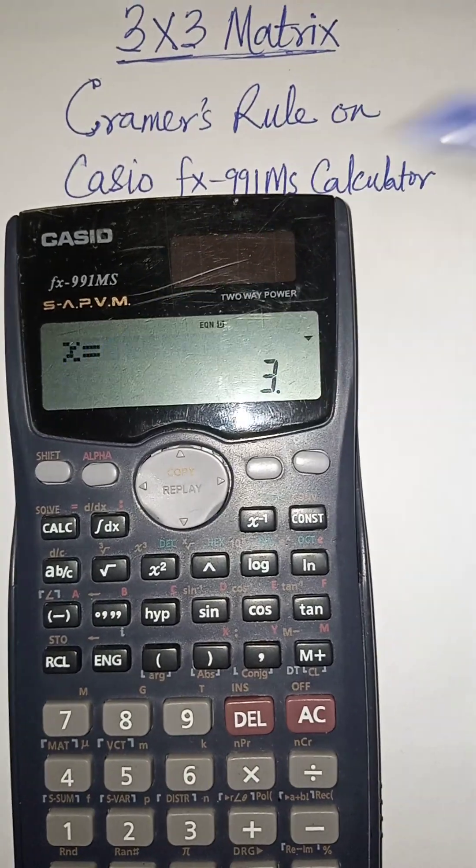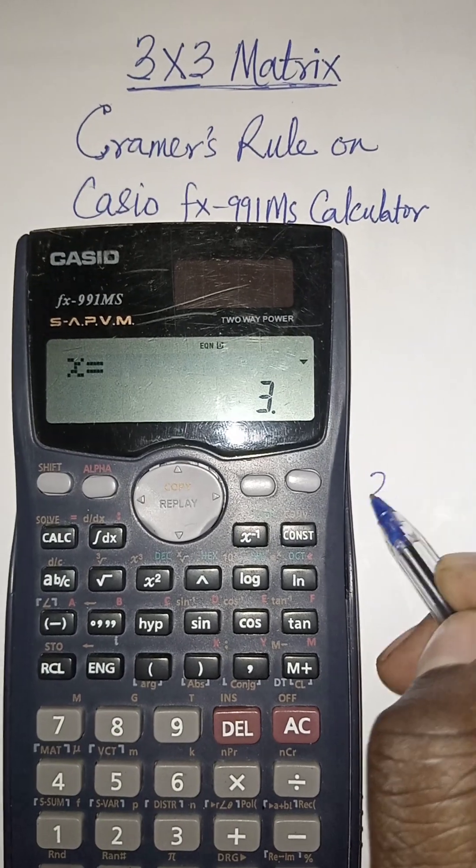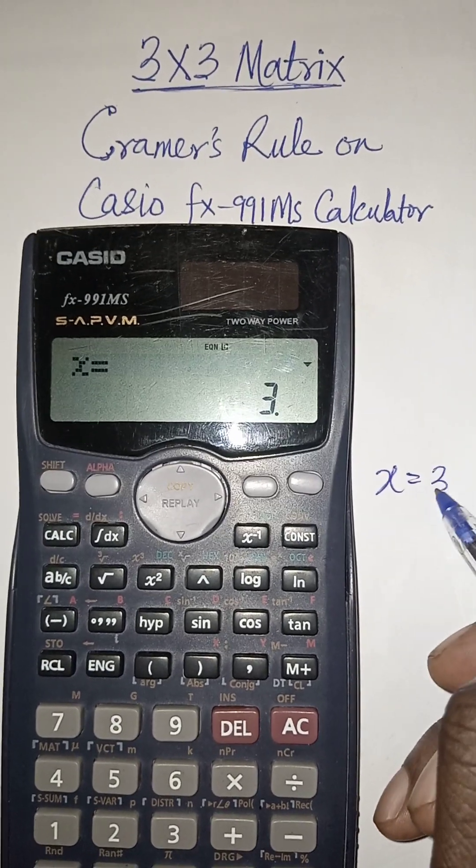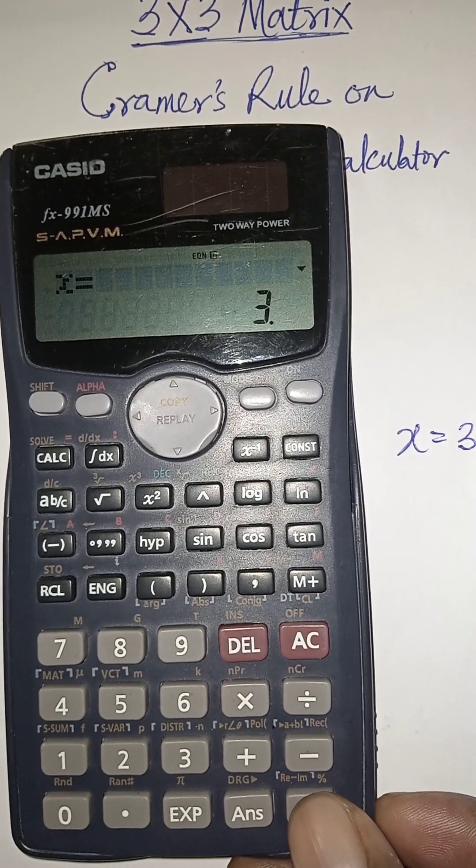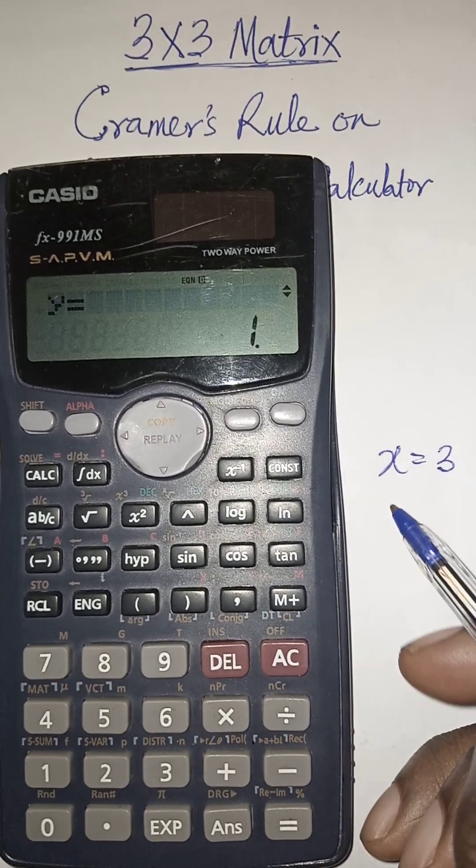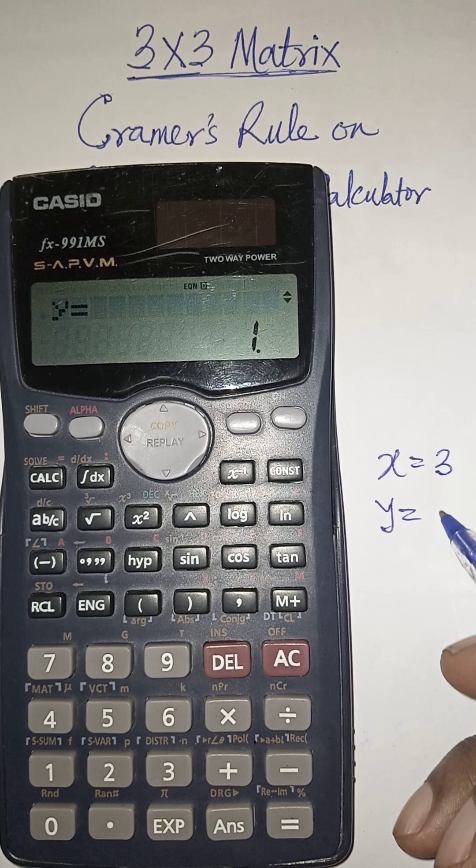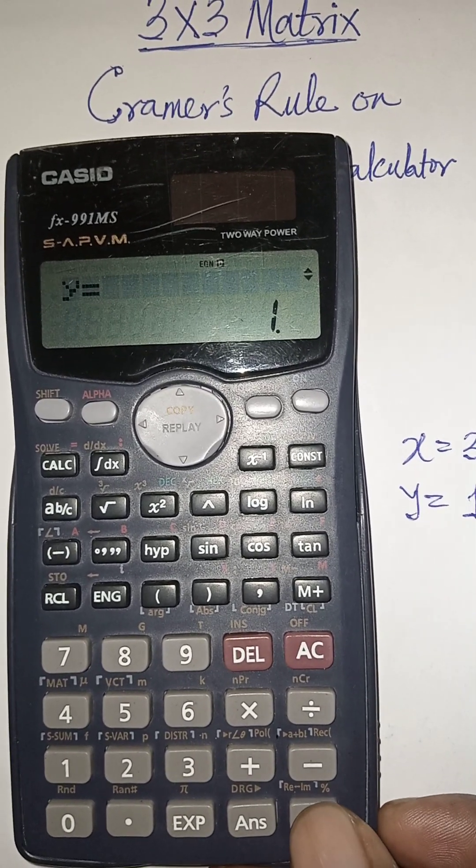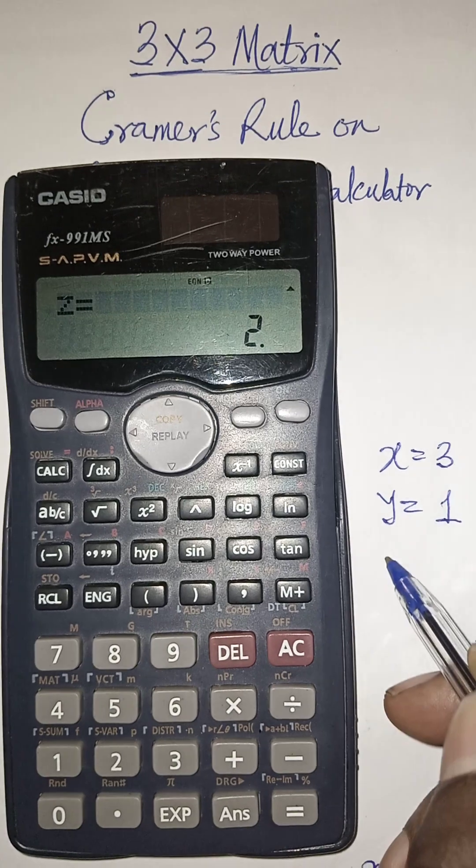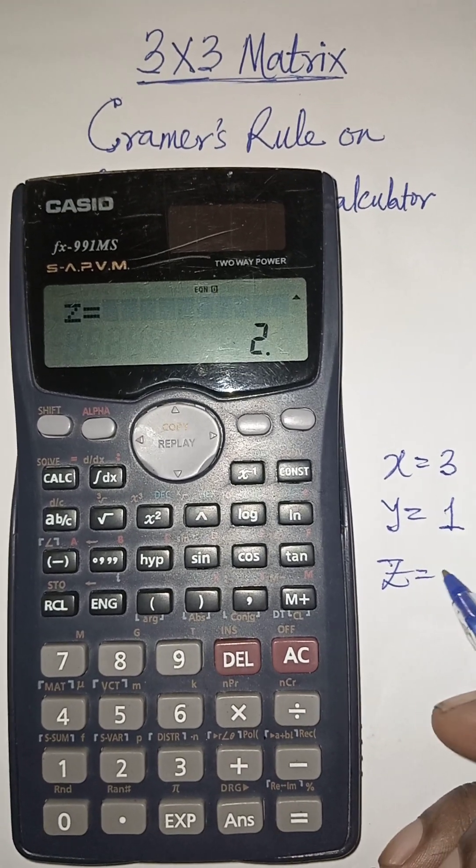You can see that the value of x has been displayed as x equals 3. Press equal to again to get the value of y. Y is displaying to be 1. If you press equal to again, you see z equals 2.